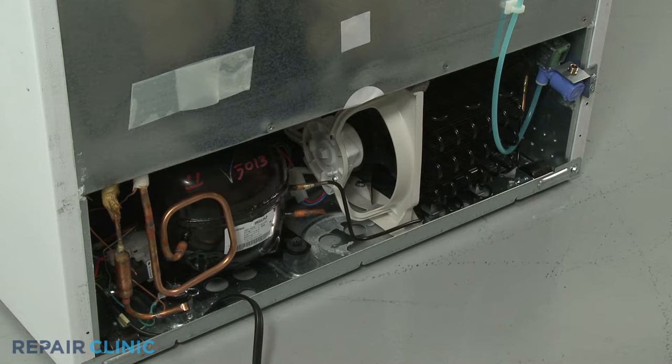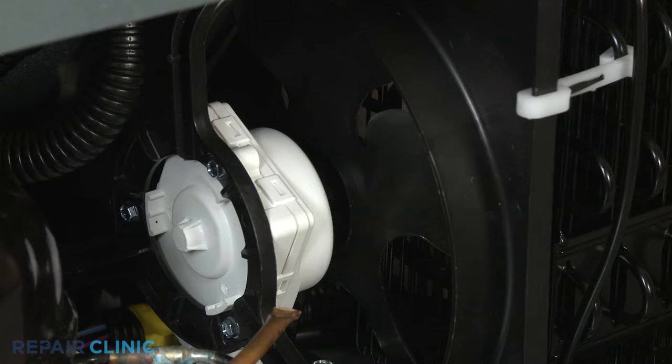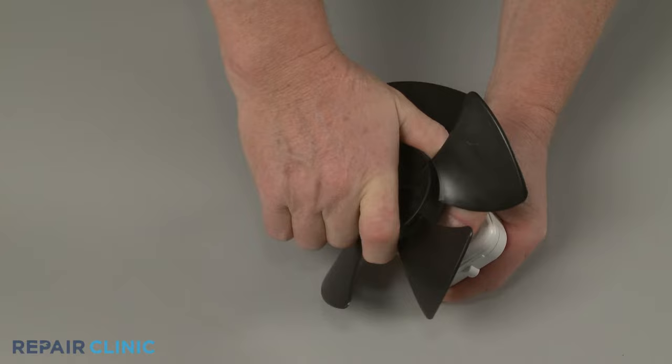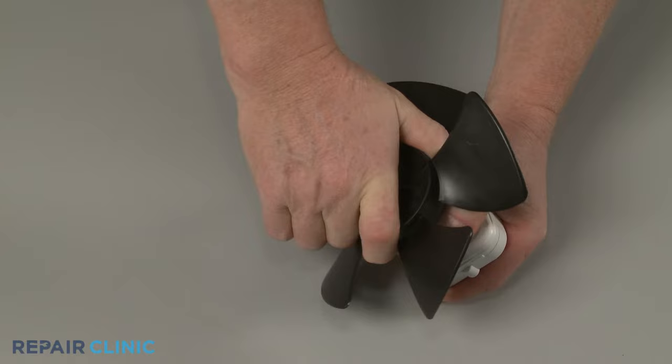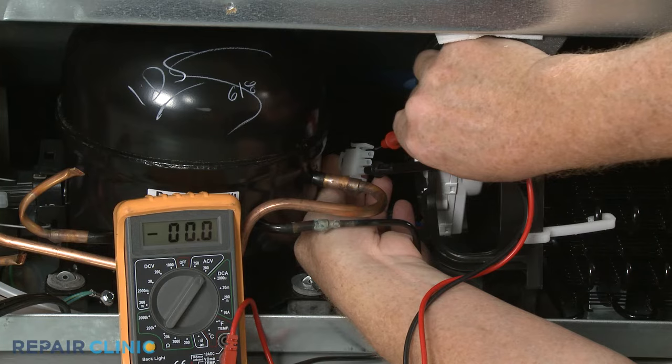You should check to see if there are any obstructions preventing the fan blades from turning. If the blades do not spin freely, it's likely that the motor bearings are worn out. You can also use a multimeter to confirm the motor is receiving the appropriate voltage, as indicated on the motor. If the motor is receiving proper voltage but does not run, then the component is defective.